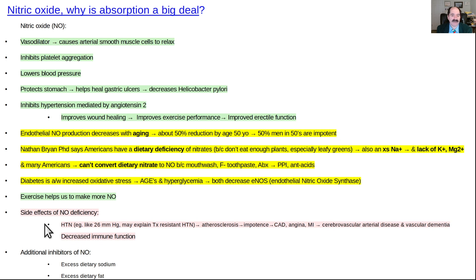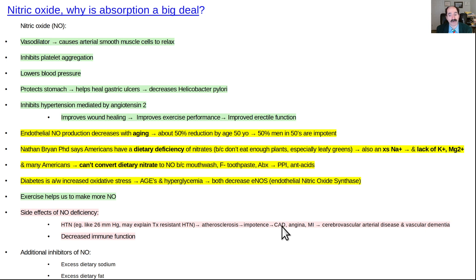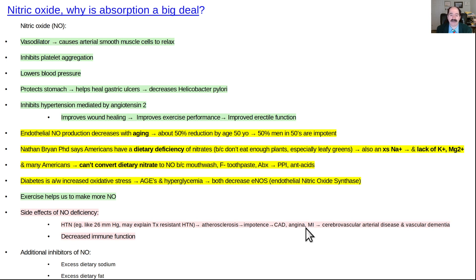Side effects of nitric oxide deficiency include hypertension, which is the main risk factor for atherosclerosis. The penile pudendal arteries are about 1.5 mm, making them prone to impotence. Coronary arteries are about 3 mm in diameter. The internal carotid artery going up to the brain is around 6 mm. Accumulating atherosclerosis in those areas puts you at risk for vascular dementia and related conditions.